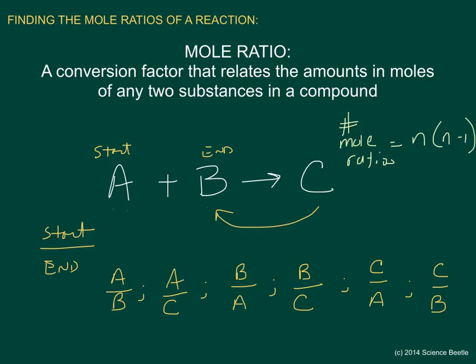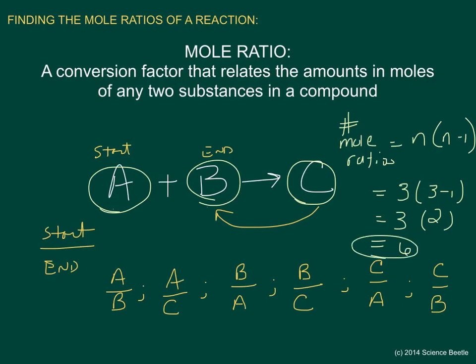The number of moles that we have here are compounds, so essentially N is the number of compounds. I've got one compound, two compounds, three compounds. If I use this particular equation to figure it out, the number of mole ratios here would be three times three minus one. Well, three minus one becomes two, so two times three will give me the number of mole ratios. In this particular case, I can expect six mole ratios as my answer.